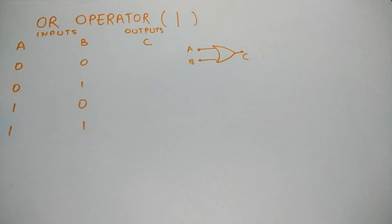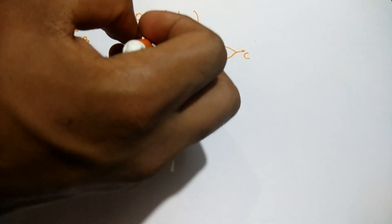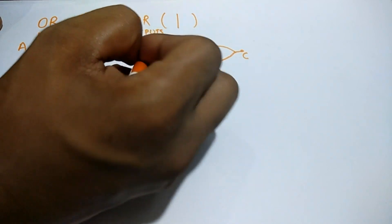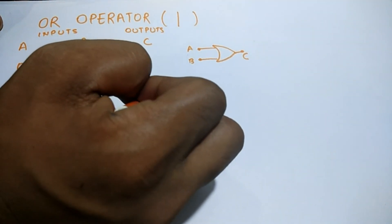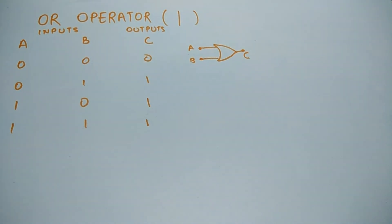As per the condition — if both inputs are low then only the output is low — the first case has both inputs low so the output is low, else we can write high. This is the OR operator.